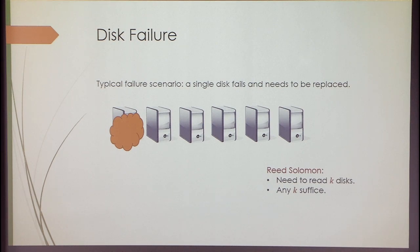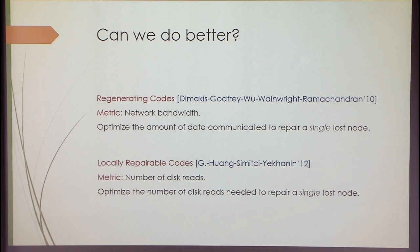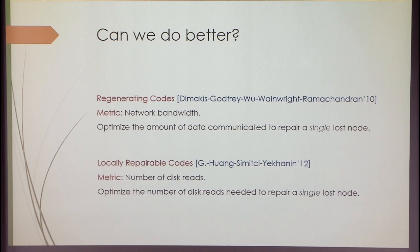Disk failure is a much more unlikely event. A disk has failed and we've decided to replace it. The same process happens, but the difference is you're just recreating it on another machine and there's no person actively waiting for the data. Can we do better using erasure coding? It's clear that rate-distance trade-offs alone won't capture the answer, because Reed-Solomon codes are optimal from that perspective. Some other property is needed that addresses how much time it takes to fix typical failures.